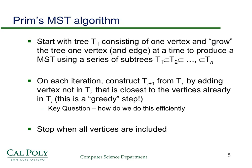For Prim's algorithm, we start with a tree T1 consisting of one vertex and grow it one vertex and associated edge at a time, producing a series of subtrees T1 ⊆ T2 ⊆ T3 ... ⊆ Tn. We construct T(i+1) from Ti by adding the vertex not in Ti that is closest to the vertices already in Ti — that's the greedy step. We stop when all vertices are included.